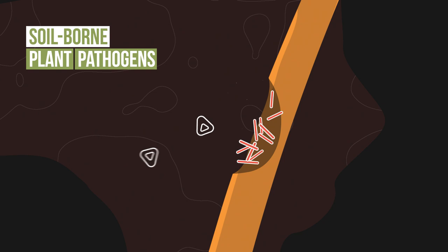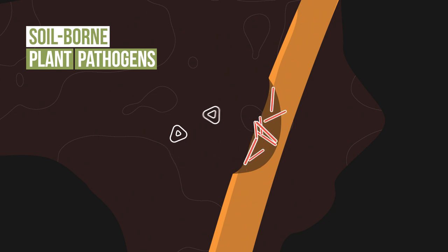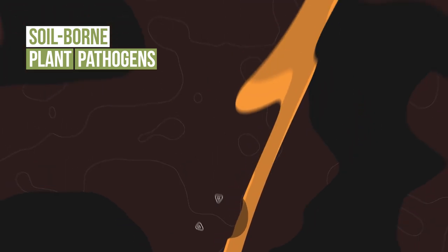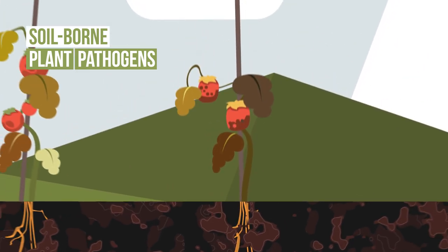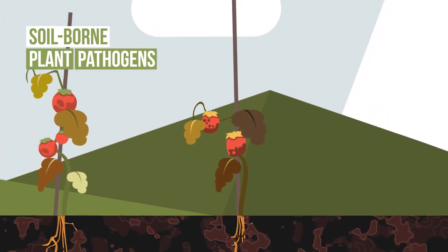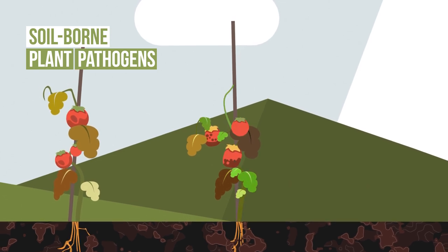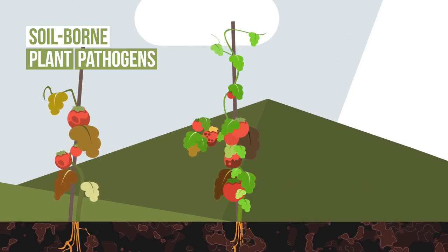Soils can develop natural suppressiveness to plant pathogens. In a healthy soil, the activities of disease-suppressing organisms that occur naturally are maximised. In some situations, organisms can be introduced into soil as biological control agents.